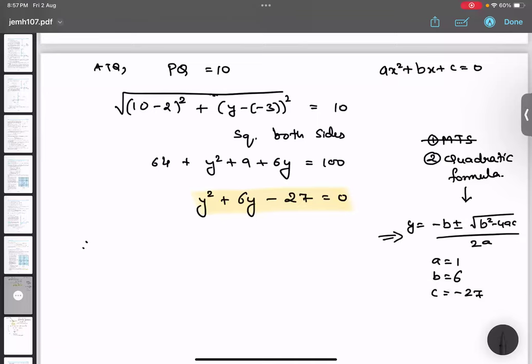So therefore, y equals to minus 6 plus minus root 6 square, always put in bracket, because 6 can be negative also, minus 6. 4a, a value is 1, c value is minus 27, that's why I was saying, upon 2, 1. Understood? Yes. Now we will solve it.